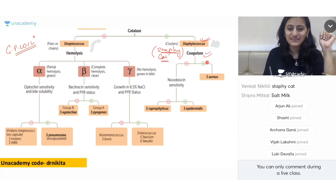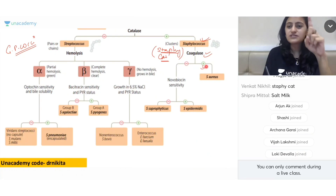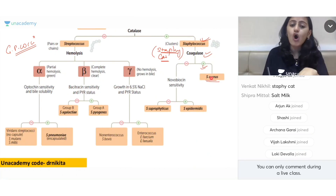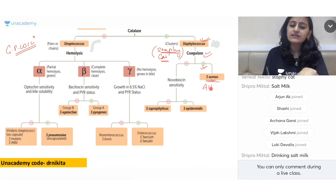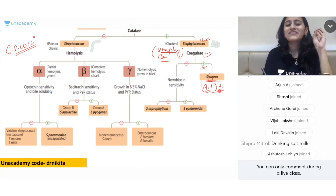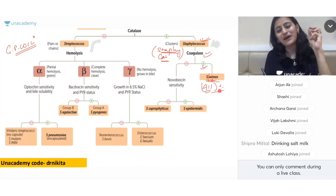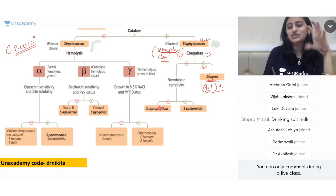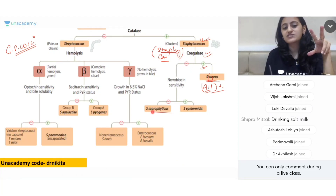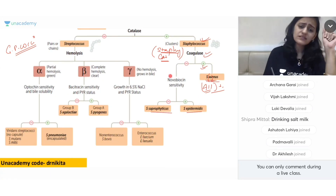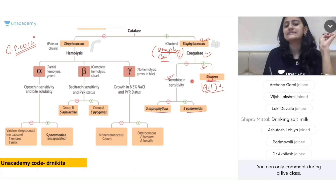In Staphylococcus, to further differentiate you do the coagulase test. Catalase positive and coagulase positive is your Staph aureus. Remember 'aureus is all positive' — it is both catalase positive and coagulase positive. To differentiate the other two, Staphylococcus saprophyticus and epidermidis, you do the novobiocin sensitivity test.